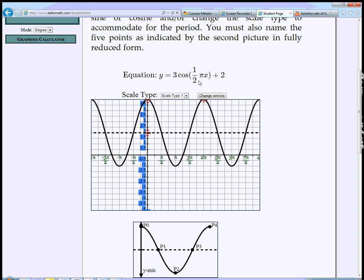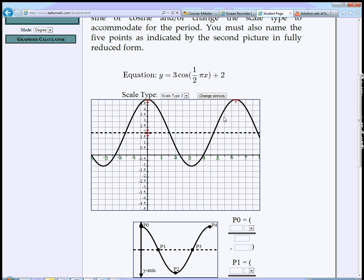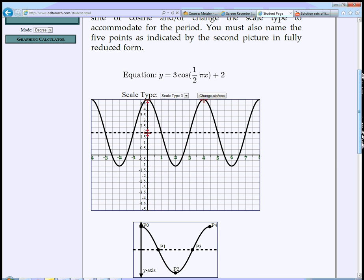And the period, we want to make 2 pi divided by 1 half pi. That's going to be four. Oh, that's an integer. And so I'm going to want to shift it so that one period is at four.